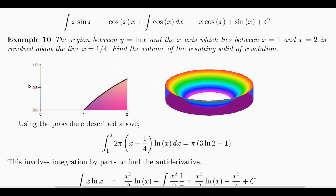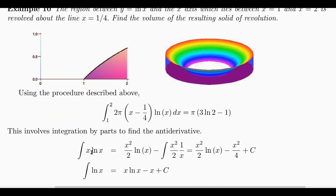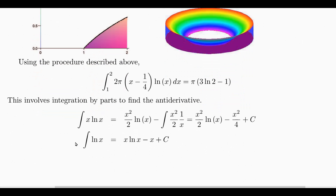Here's another example. Take the region between Y equals log of X and the X-axis for X between 1 and 2, and revolve it around X equal to 1 fourth, a vertical line. The distance to the line of revolution is X minus 1 fourth. So you take 2 pi times that distance times the height of the shell and integrate from 1 to 2, which gives pi times a certain expression. This involves integration by parts: X log X equals X squared over 2 times log X minus a correction term.